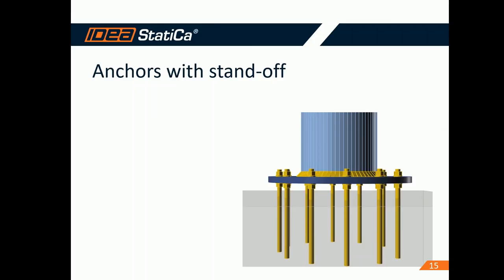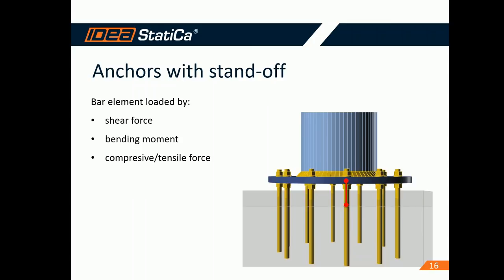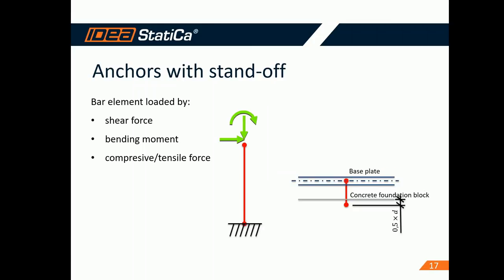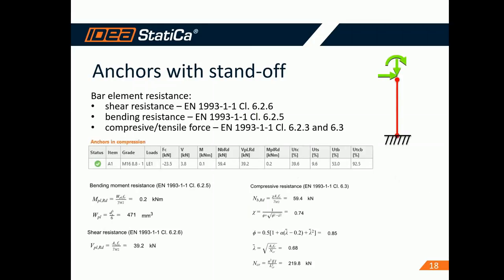For standoff anchors, a small bar element is inserted between the base plate and the concrete foundation block. It is loaded with shear force, bending moment, and compressive or tensile force. The bar element resistance is calculated according to code procedures. Typical bending resistance is calculated with the section modulus and yield strength. Relevant procedures are also used for American and Canadian codes. You can explore the formulas and values used in the detailed results.